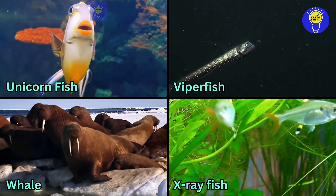Y is for yellow box fish. Z is for zebra moray.